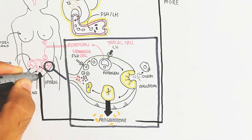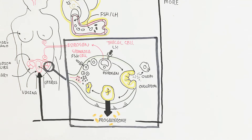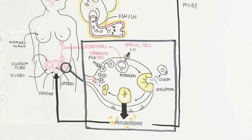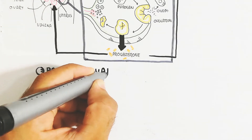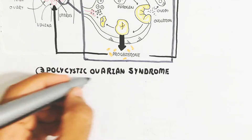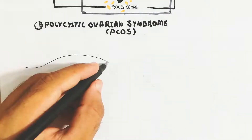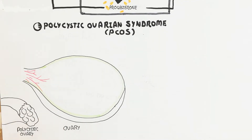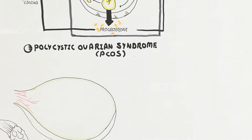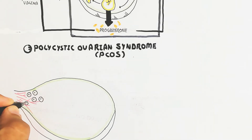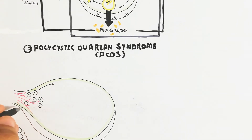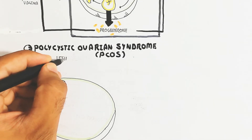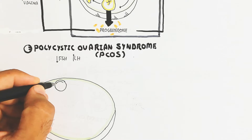Now let's discuss PCOS. FSH decreases due to genetic defects or other factors leading to dysfunction of the hypothalamus. This leads to polycystic ovary formation because the primary follicle cannot mature — FSH is insufficient to bind with it. Instead, LH will bind with the thecal cell.